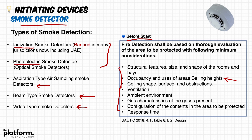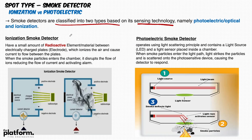You may hear about ionization type or photoelectric optical smoke detectors. These days in the UAE we only hear about the photoelectric type because the ionization type is banned in the UAE and many other countries. The reason is that it contains a small amount of radioactive material between electrically charged plates that ionizes the air and causes current to flow. When smoke particles enter the chamber, they disrupt the flow of ions, reducing the current and activating the alarm.